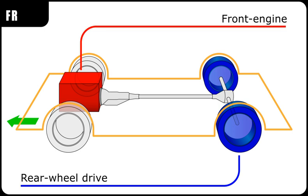Rear engine, four-wheel drive. The rear engine, four-wheel drive layout, abbreviated as R4, places the engine at the rear of the vehicle and drives all four wheels. This layout is typically chosen to improve the traction or the handling of existing vehicle designs using the rear-engine, rear-wheel drive layout. For example, the Porsche 911 added all-wheel drive to the existing lineup of rear-wheel drive models in 1989.